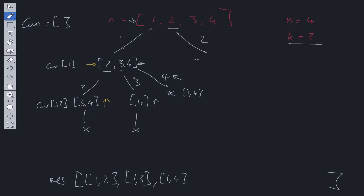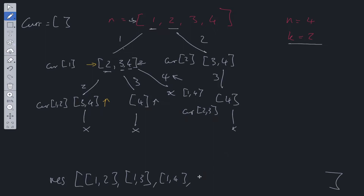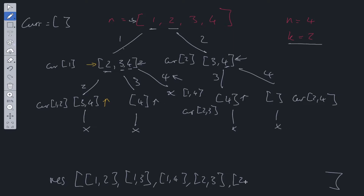We take 2 — not adding 1 again, as we're going in order to avoid duplicates. Current is now [2]. We take 3, leaving only 4. Current becomes [2, 3]. We can't go further, so we push [2, 3] into the result array. We backtrack, take 4, current becomes [2, 4], can't go further, so we add that to results.